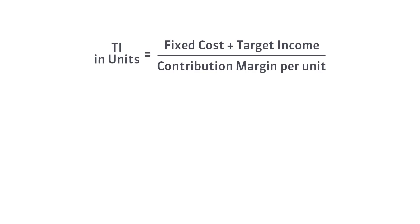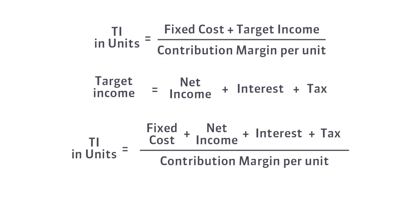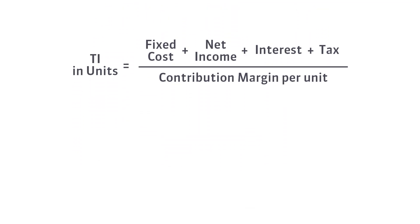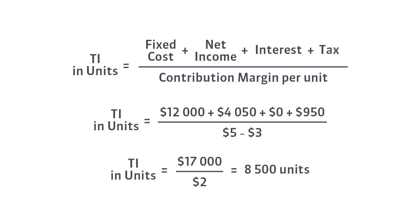Our calculations are correct, so let's add our formula to the target income formula. Now let's check the number of pots needed to attain a net income of four thousand and fifty dollars. As you can see, we need to sell the same number of pots — eight thousand five hundred — to attain an operating income of five thousand dollars and a net income of four thousand and fifty dollars.